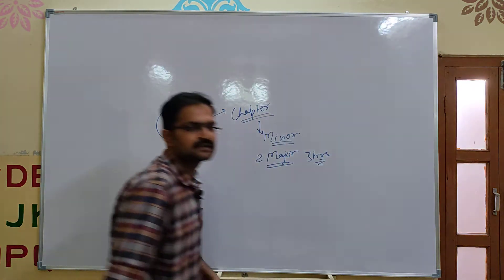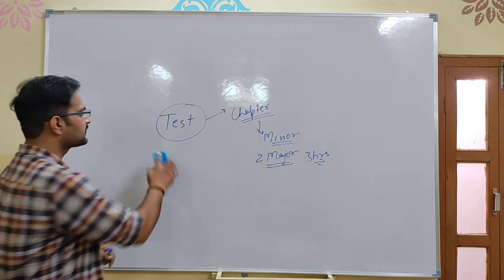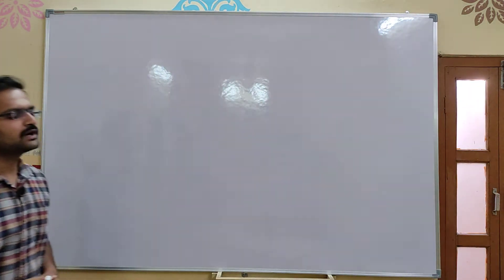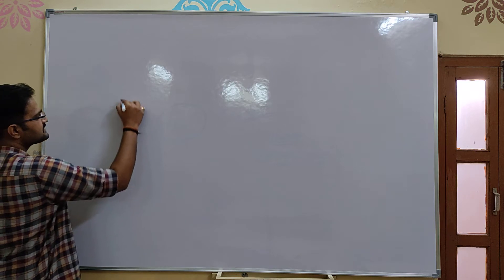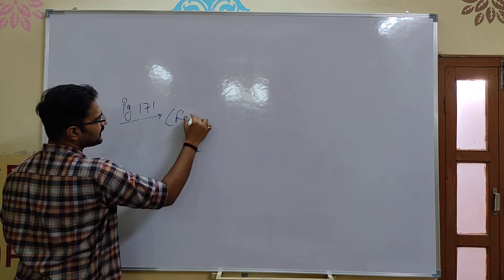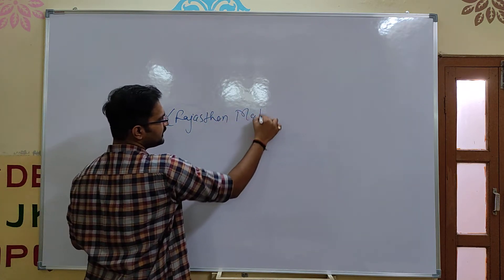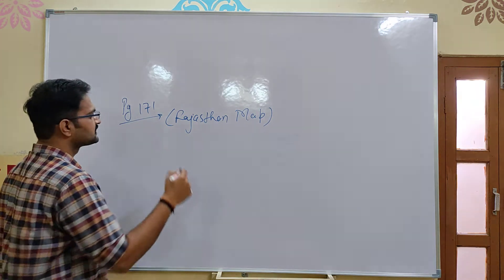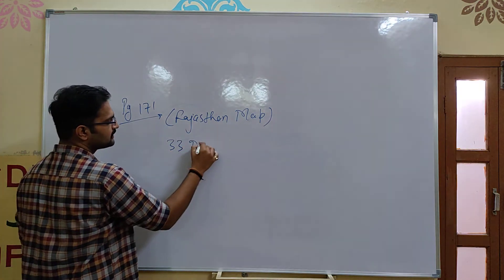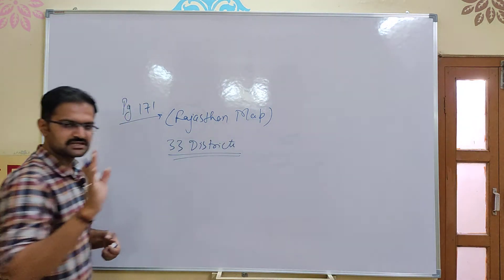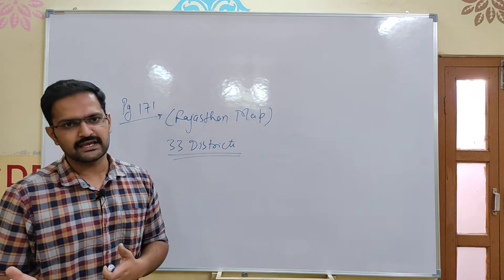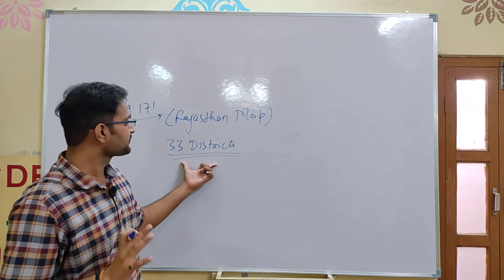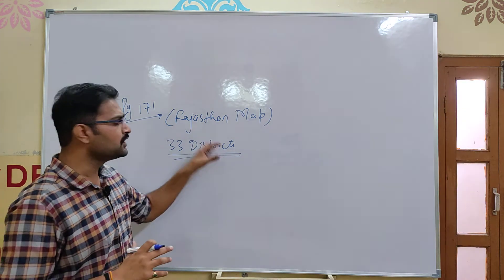Today we will start the map class. You can take a paper or a notebook. There is a map with population and the literature chapter. The rest of your 33 districts — you should know them fully. Because 33 districts on page number 171 — you should be able to know about the location of each district.